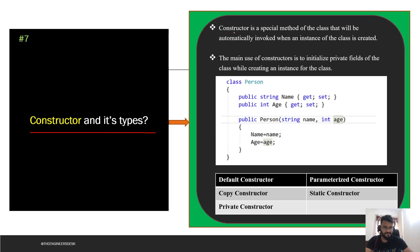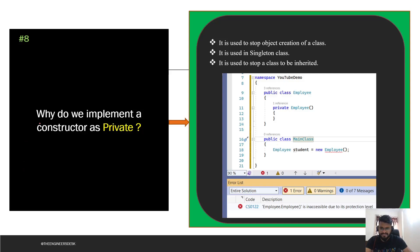The next question is: what are constructors and what are their types? A constructor is a special method of the class that is automatically invoked when an instance of the class is created. The main use of a constructor is to initialize private fields of the class. The types of constructor are: default constructor, parameterized constructor, copy constructor, static constructor, and private constructor.